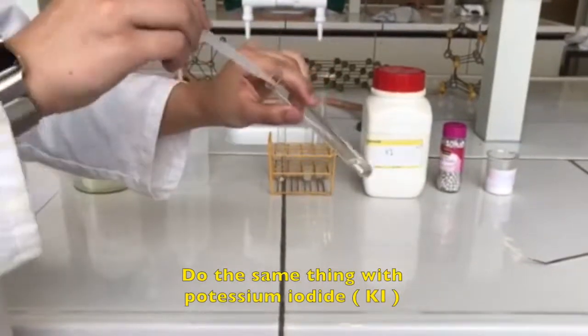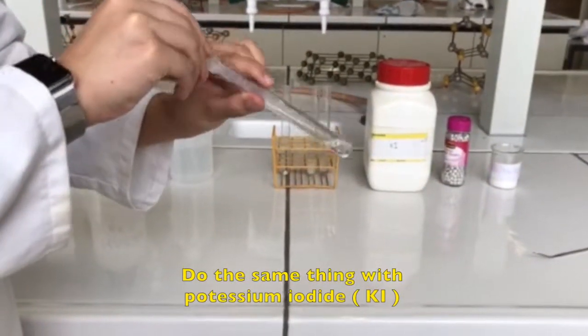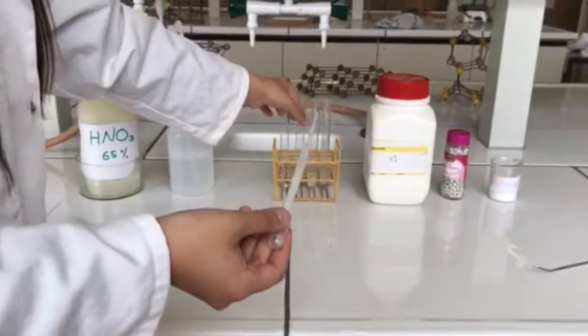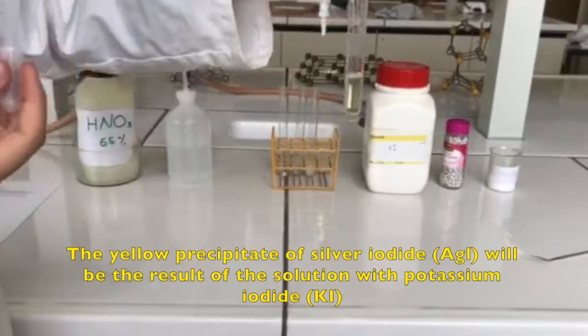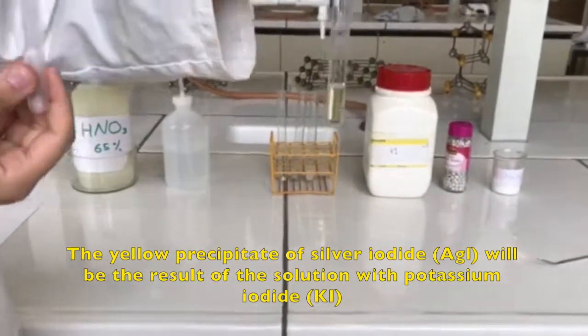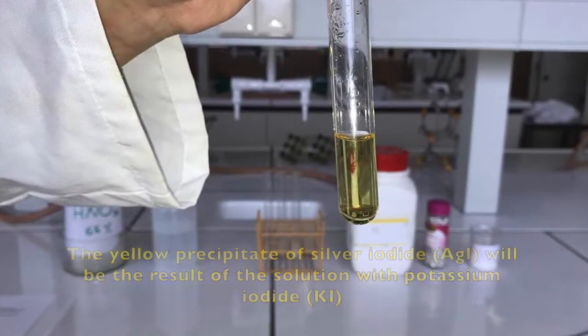Do the same thing with potassium iodide. The yellow precipitate of silver iodide will be the result of the solution with potassium iodide.